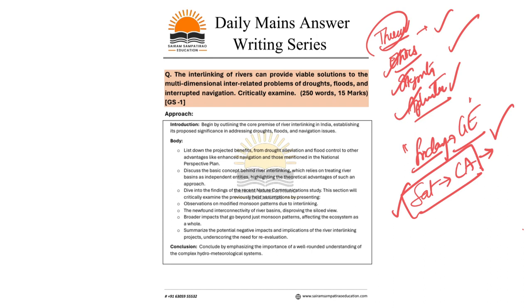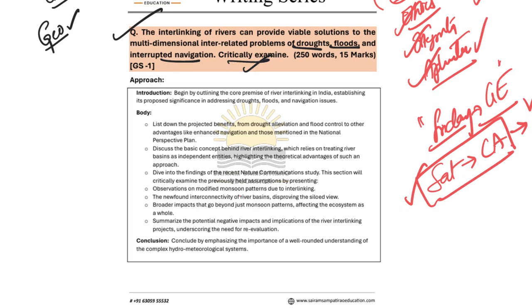Now let us look at the question of the day from GS1 — a geography-related question. The question is: 'The interlinking of rivers can provide viable solutions to the multi-dimensional interrelated problems of droughts, floods, and interrupted navigation. Critically examine.' Whenever a question asks to 'critically examine,' you should talk about both the positives and negatives of that particular program.